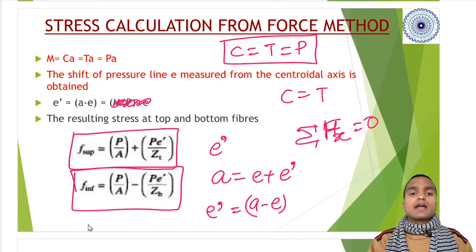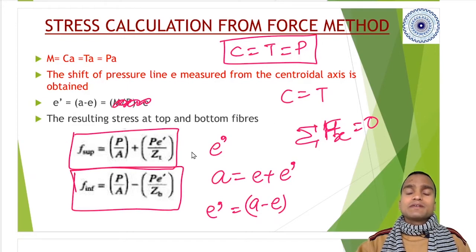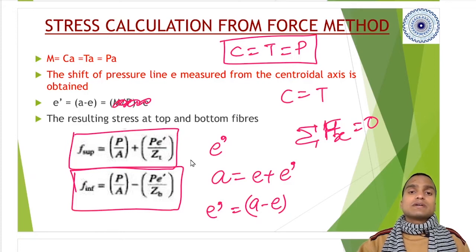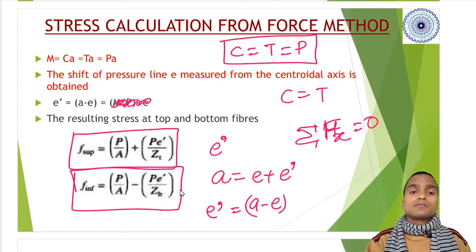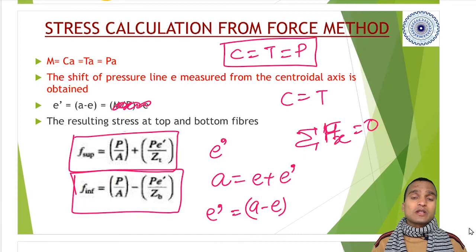We have used P/A plus Pe'/Zt where Zt is the top section modulus for the top fiber, and Zb is the section modulus for bottom fiber. This is all about the force method. We will be discussing at least three numerical problems based on this method in upcoming videos. Till that, stay tuned and stay safe. Thank you.